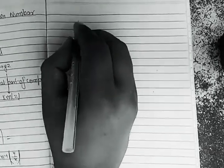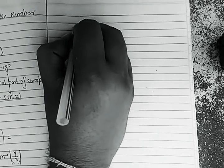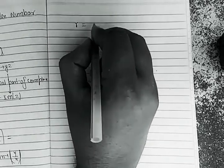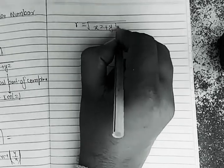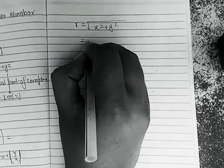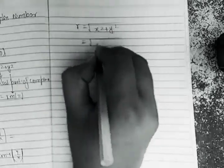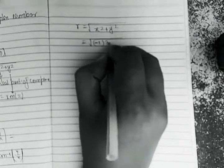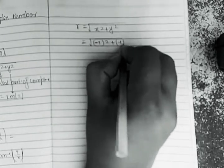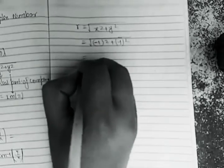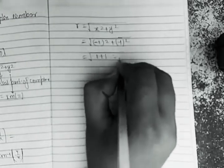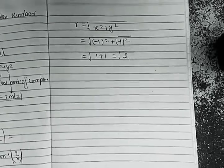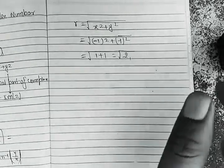The first thing we need to calculate is r. r equals √(x² + y²). Here x equals −1 and y equals −1, so r equals √((−1)² + (−1)²) = √(1 + 1) = √2. So r equals √2.